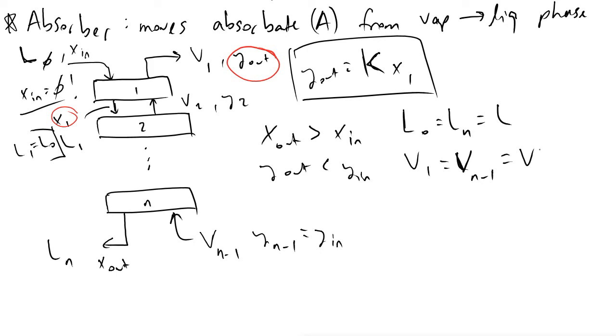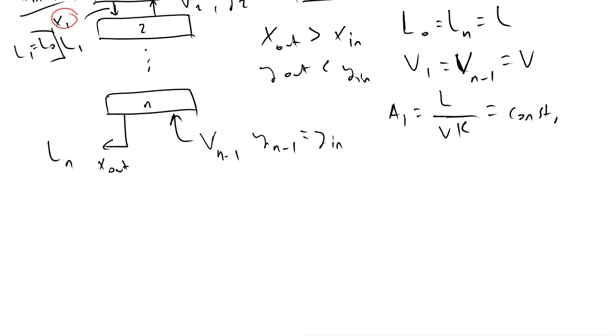And now what we can do is define an absorption factor. I will call it A_i. And that will be equivalent to L over V times K. And this is equal to a constant value.